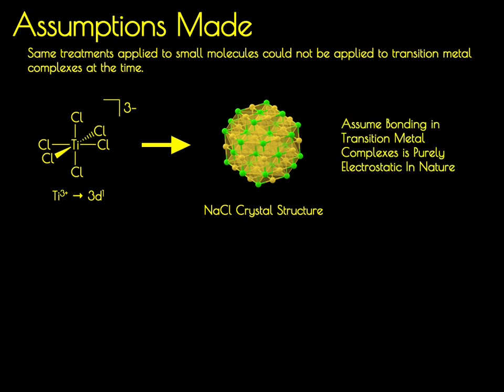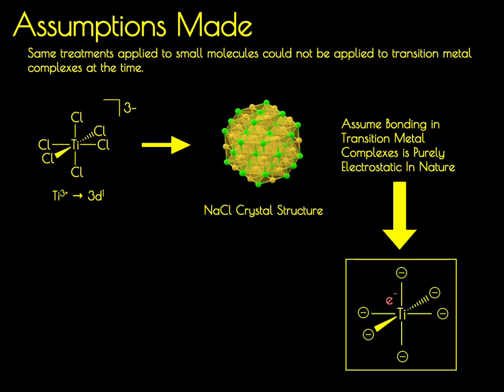The assumption was made that to a first approximation we can consider the bonding between the transition metal ion and its ligands as being ionic in nature. When this is done, we can consider the titanium ion surrounded by six negative charges, and that valence electron will interact with those six negative charges surrounding the titanium center.